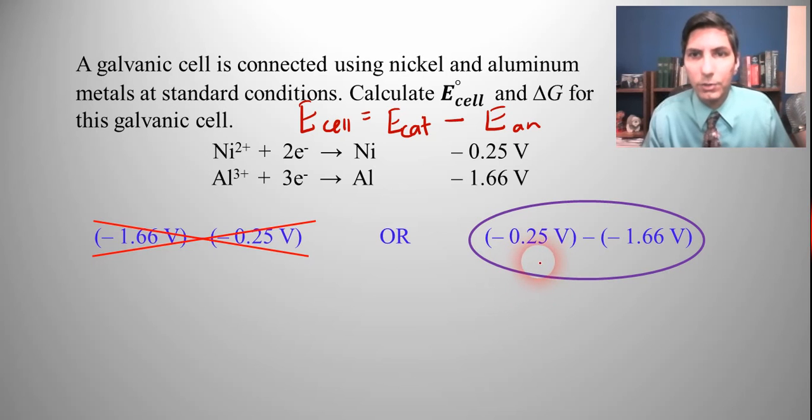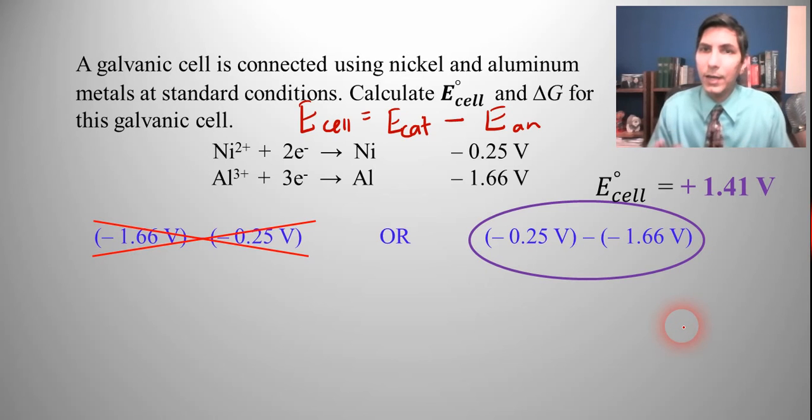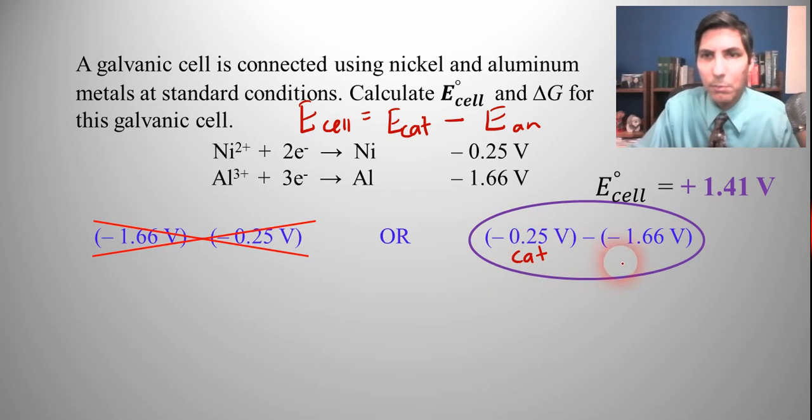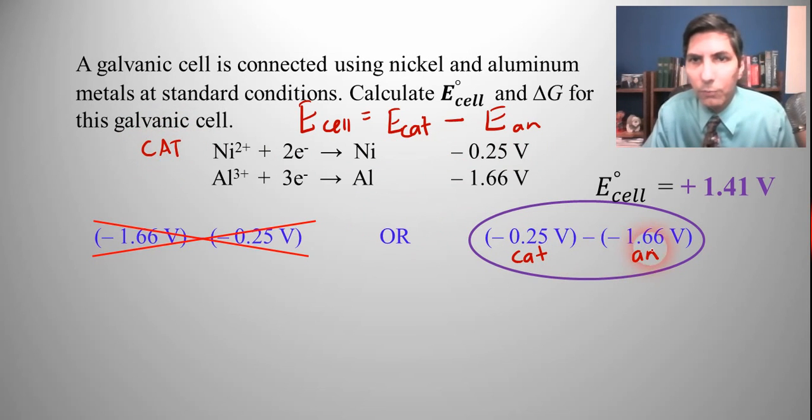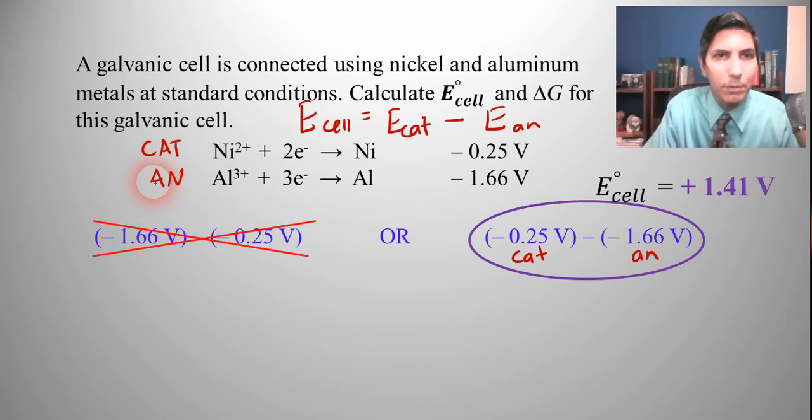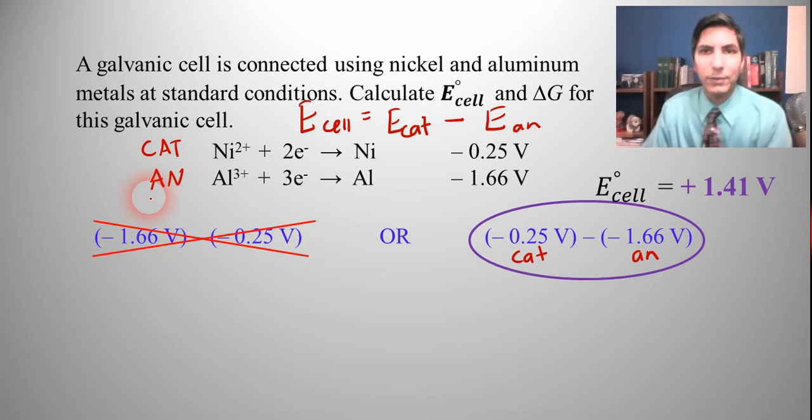So that means that this is the overall equation here. And to find the E cell, we just do the arithmetic here, and that's going to be a positive 1.41 volts. Now, the problem did not ask us to identify the cathode and the anode. But if it had asked us to do that, we know that it's always cathode minus anode. So that means that the 0.25 or the nickel would have to be the cathode where reduction is taking place. And the negative 1.66 would have to be the anode. That's the aluminum where oxidation is taking place. And we could do all the other exercises that we learned in the last videos. But for now, let's just keep it simple here. And we have the E cell. Let's calculate delta G.